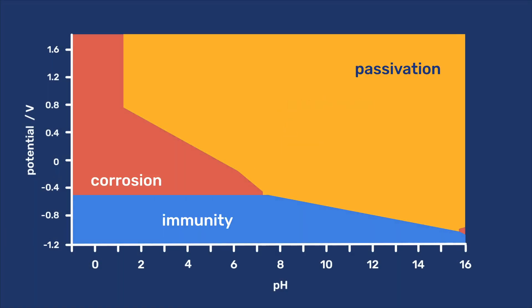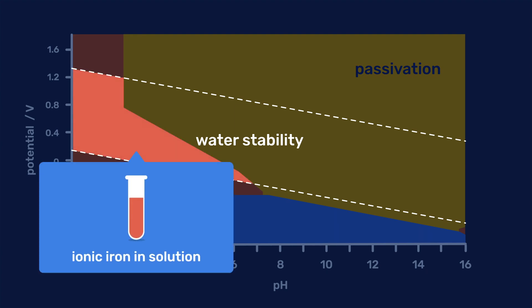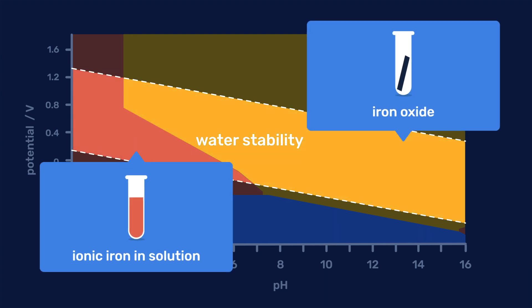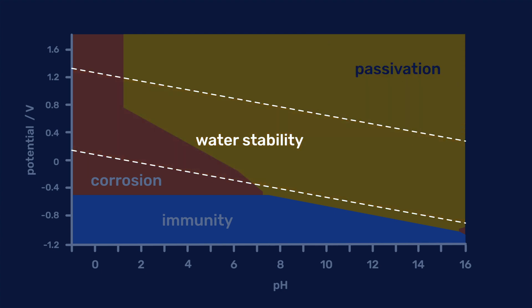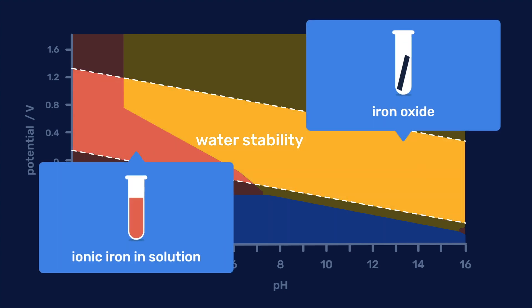Looking closer at the Pourbaix diagram of iron, we see that, in the region of water stability, iron is present either as ionic species in solution or as an oxide. This means that iron is unstable in contact with water. However, depending on the conditions, it can corrode or be passivated.